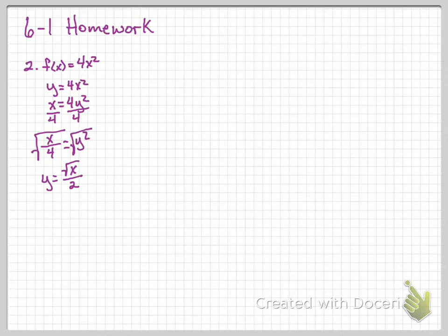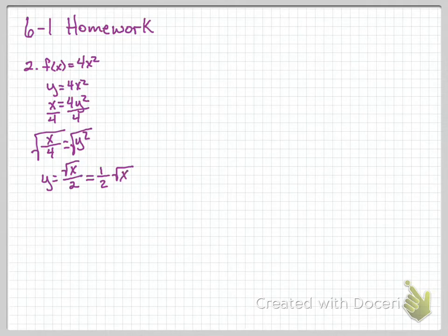Because when we take the square root of x over 4, we have to take the square root of the numerator and the square root of the denominator. The square root of x is just the square root of x. The square root of 4 is 2. So y equals the square root of x over 2, which we can rewrite as one-half square root of x, because there's a 1 in front of that square root of x — that's 1 over 2. We can split that fraction out and show it as one-half square root of x.